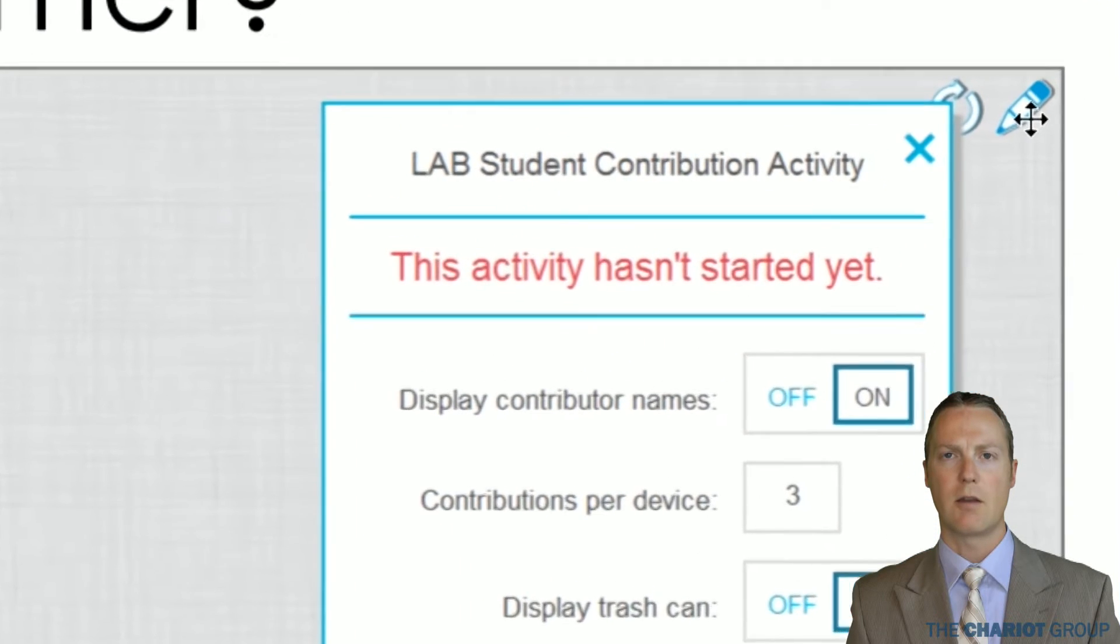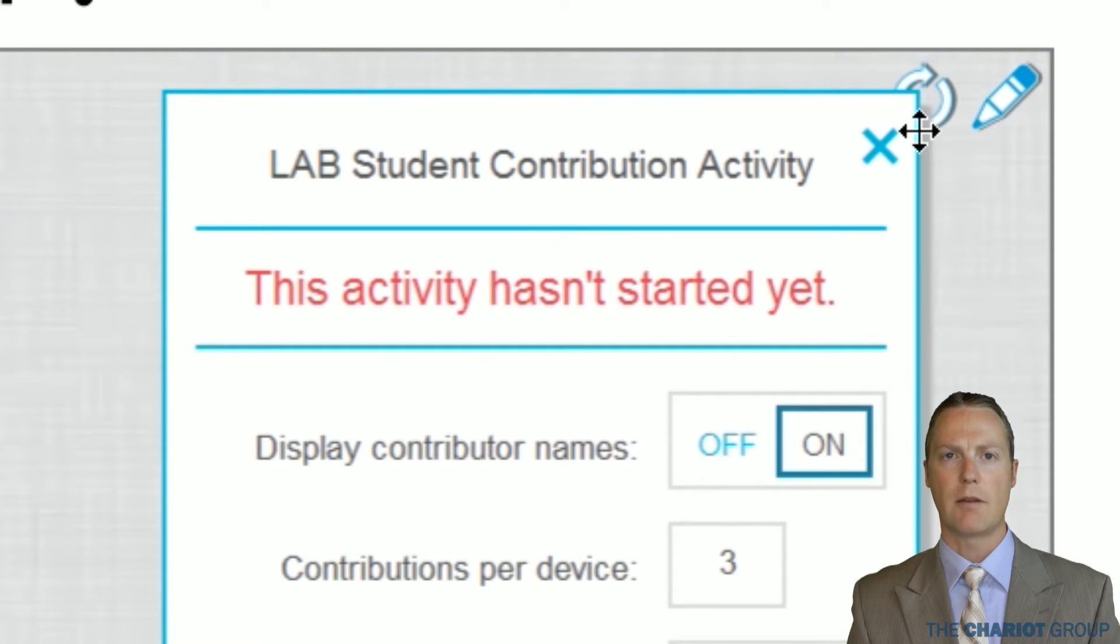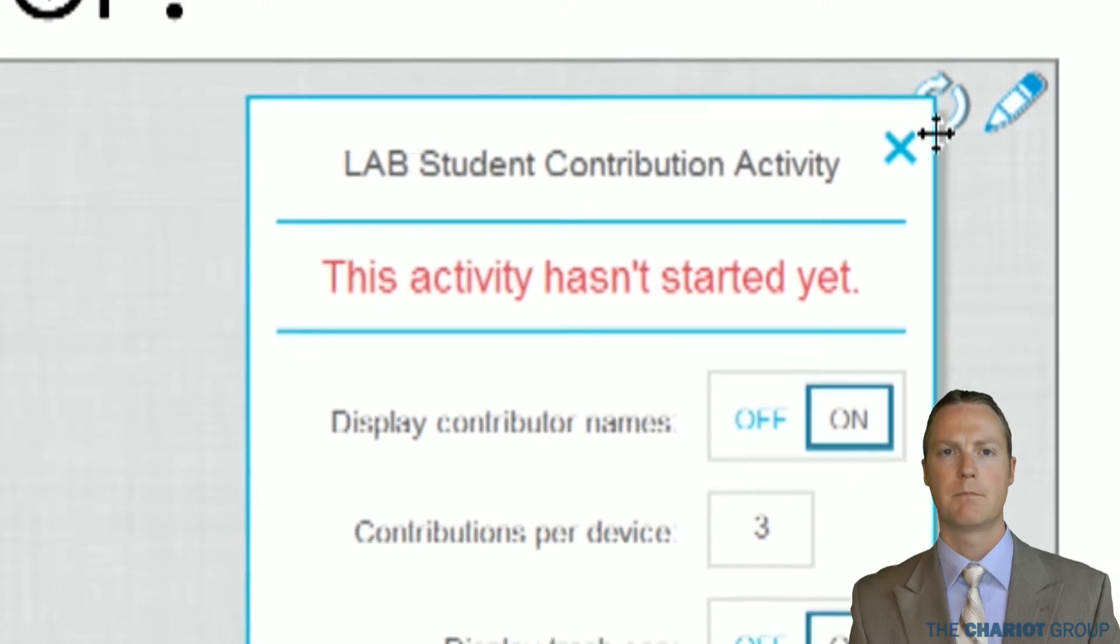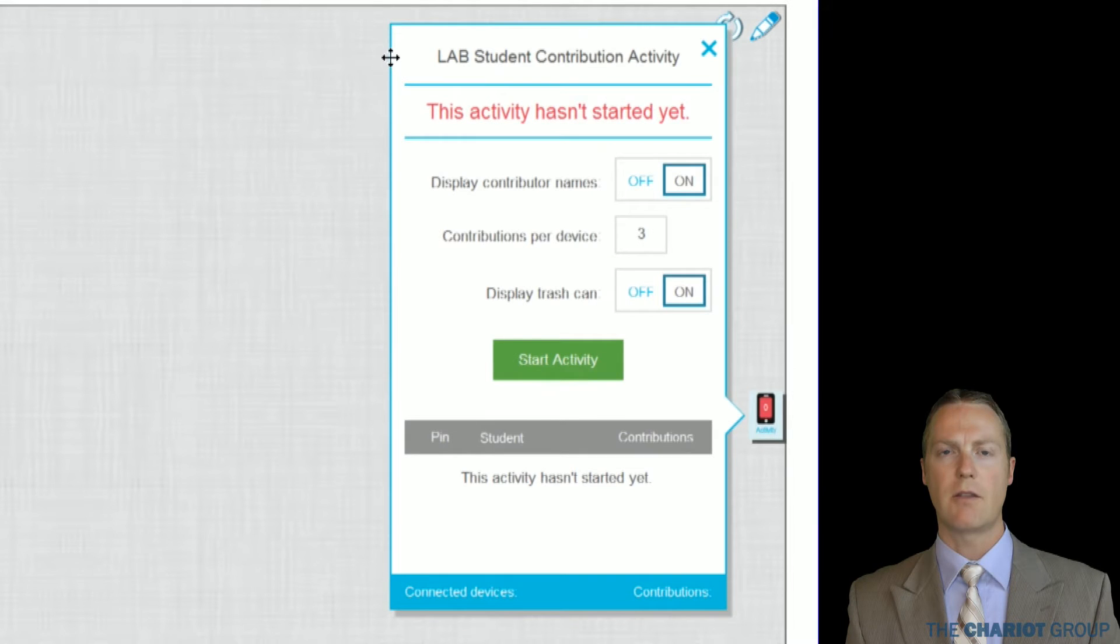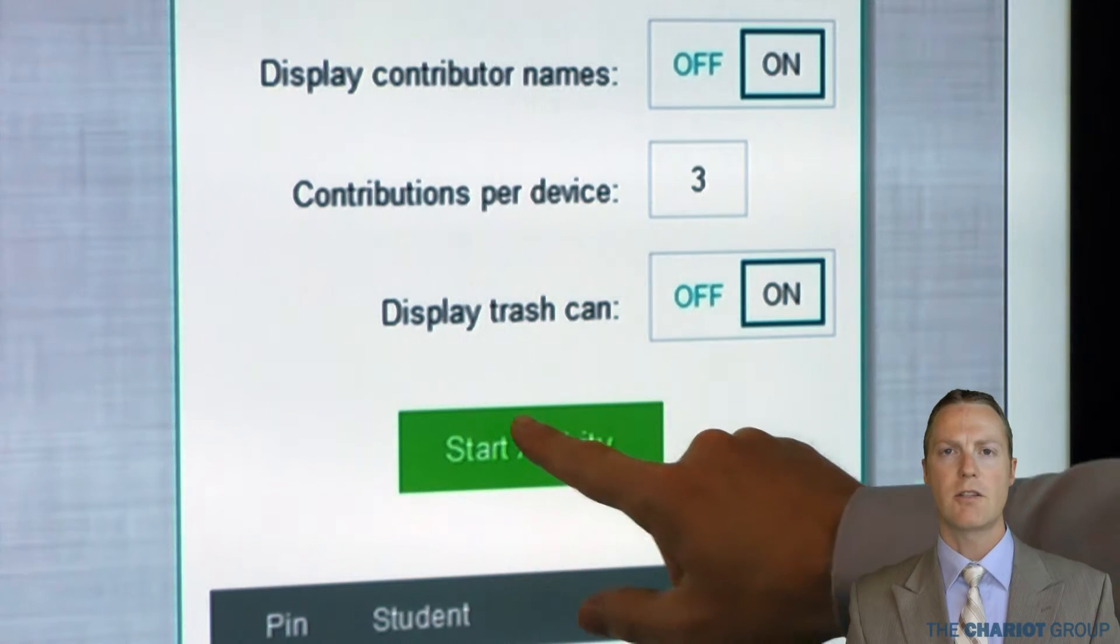If we need to go back to editing, we can click the pencil in the top right. Or to reset the activity, we can also click this Reset icon. Now we will deliver these in class. On the first activity on the right side is the control panel for the Shout It Out activity. Click on Start Activity.